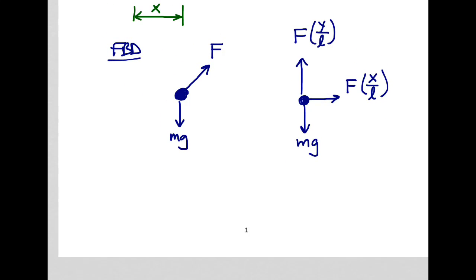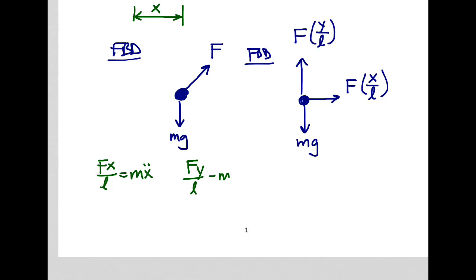Now we apply Newton's second law — not once but twice, since we're working in two dimensions. In the x direction: F·(x/L) = m·x-double-dot. In the y direction, there are two forces: the constraint force upward and gravity downward, giving F·(y/L) − mg = m·y-double-dot.